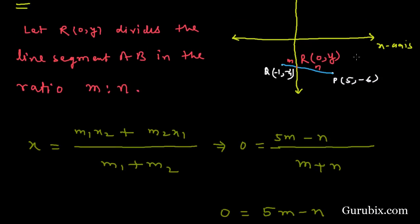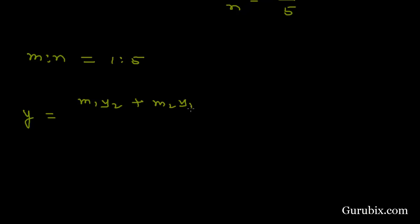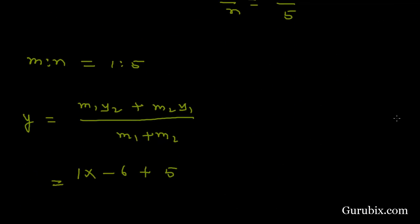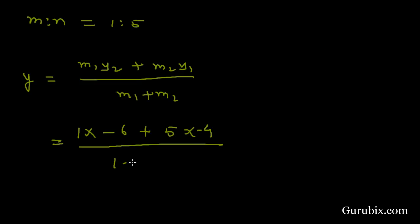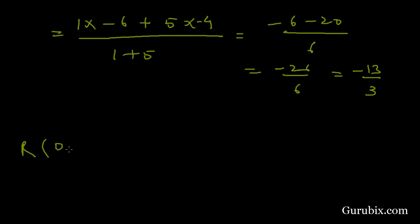Now we shall find the y-coordinate of point R using the section formula: y = (M₁·y₂ + M₂·y₁) / (M₁ + M₂). Here M₁ = 1, y₂ = -6, M₂ = 5, y₁ = -4. So y = (1×(-6) + 5×(-4)) / (1 + 5) = (-6 - 20) / 6 = -26/6 = -13/3. Therefore the coordinates of point R are (0, -13/3). This is the solution of the example. Thank you.